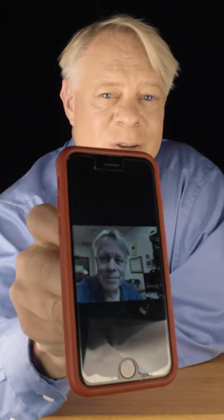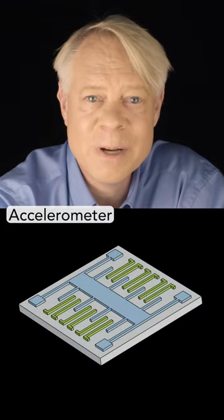How does a phone detect its orientation? Built into the circuitry is a tiny device called an accelerometer.